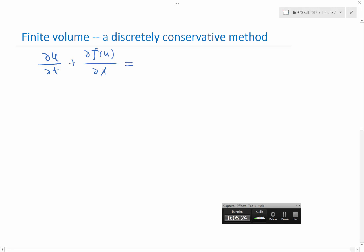So u here is some conserved quantity, some density of the conserved quantity. For example, in the last example when we are stuck in traffic, u is the number of cars per unit length of the highway. f is the flux—for example, how many cars per unit time is going to flow through a particular checkpoint.